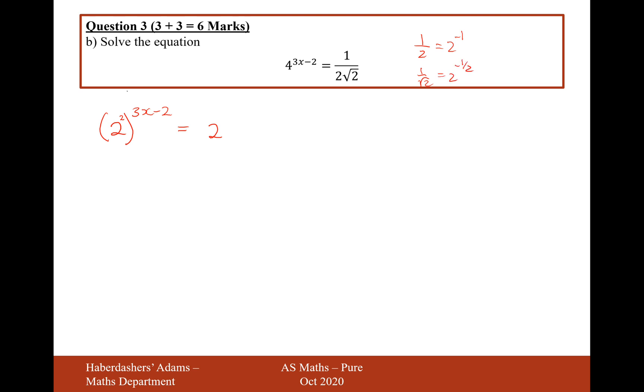If we now expand the brackets on the left-hand side, when you do a power of a power, you multiply your powers together, so 6x - 4 equals 2^(-3/2).